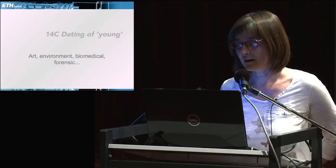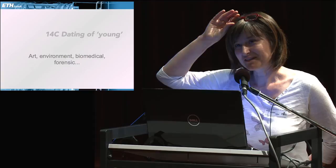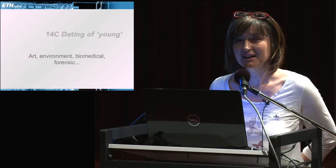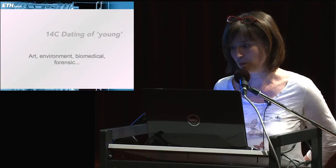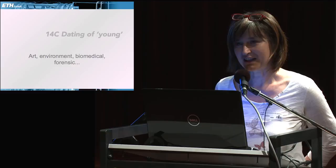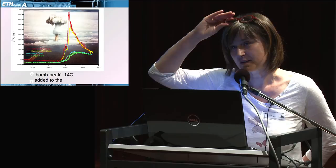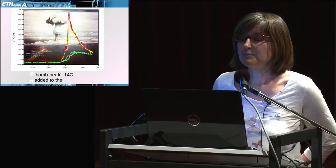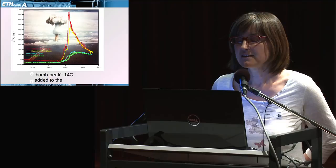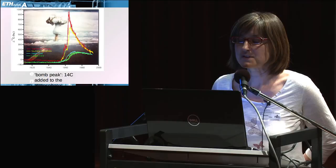The young carbon — the bomb peak — is something of interest. In the 1950s, late 50s and early 60s, nuclear tests artificially doubled the production rate of C-14 in the atmosphere. What you see here is what we call the bomb peak. On the left side is so-called delta C-14, showing how much above the normal production rate was created. The peak is over zero — this extra C-14 went into the atmosphere and is slowly disappearing, almost gone now.